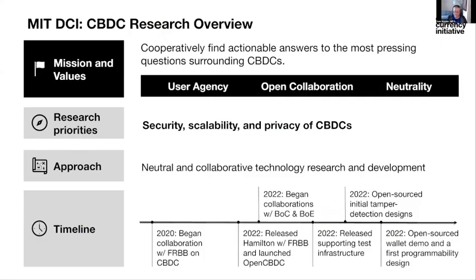It's useful to start from a place of where the DCI's CBDC research has been focused. Our core mission has been to cooperatively find really useful and actionable answers to the most pressing questions in this space. Questions around that mission have been focused on user agency and open collaboration. So far our research priorities have been focused particularly on security, scalability, and privacy, but we'll also talk about where some of our priorities are heading.